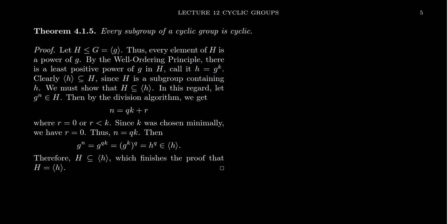Because the subgroup H contains little h, that means the subgroup H will contain the cyclic subgroup generated by little h. So what we need to do is we need to show that H is itself a subset of the cyclic subgroup generated by little h. So how are we going to do that?